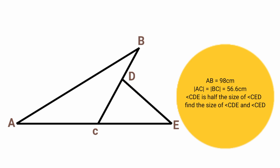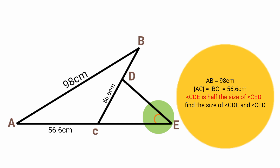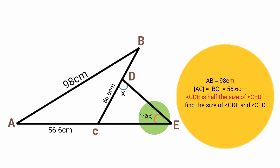In this question, line AB is 98 centimeters in length, and line AC and line BC are equal in length at 56.6 centimeters each. Angle CED is half the size of angle CDE, so we can label angle CDE as X and angle CED as half X. We are asked to find the respective sizes of angle CDE and angle CED.